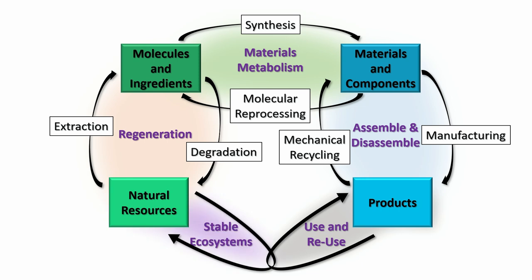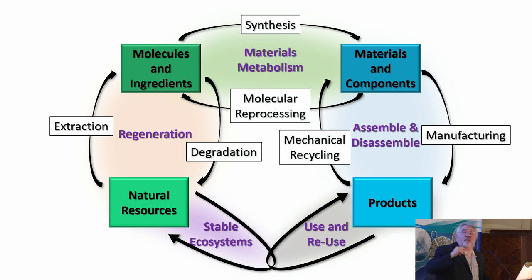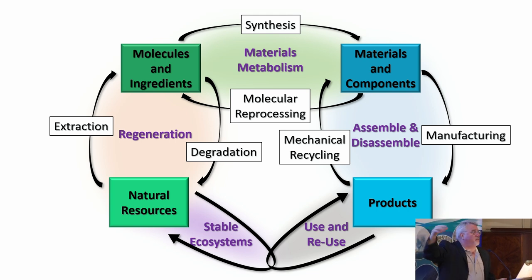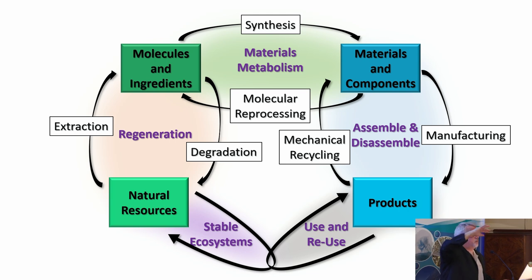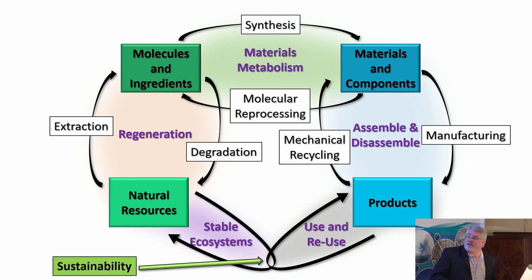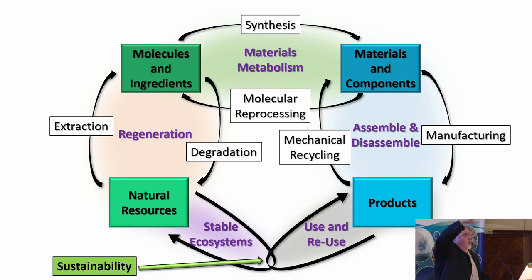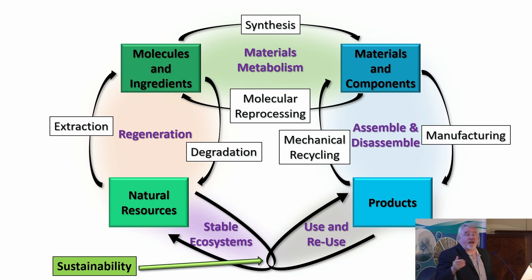Then we want those molecules and ingredients to degrade back to natural resources through the regeneration cycle, so that we can ultimately maintain stable ecosystems. This isn't a circle — I refer to this as a pendulum. Going clockwise in this pendulum is the human-built world, and the other direction is the natural world. At the intersection on the bottom is an algorithmic assessment of sustainability — we can look at how the human-built world is impacting the natural world and whether that overlap is appropriate or not. It would be foolhardy to believe there's no impact, but we must be mindful of what that impact is.